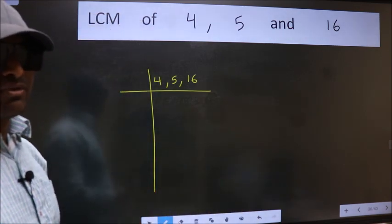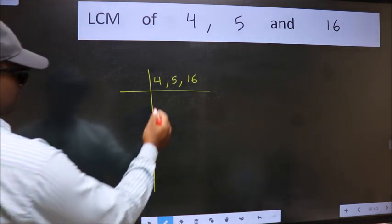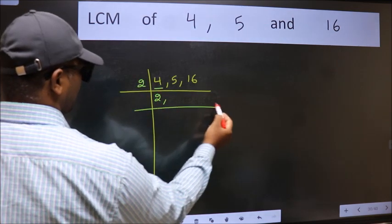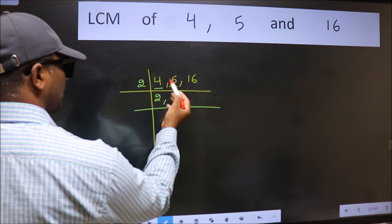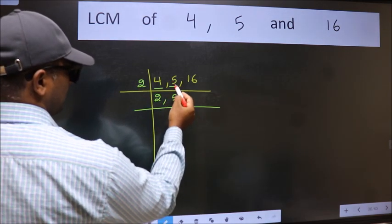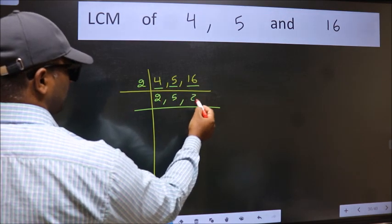Now we should focus on the first number which is 4. 4 is 2 times 2. The other number 5 is not divisible by 2 so we write it down as it is. The other number 16, when do we get 16 in the 2 table? 2, 8, 16.